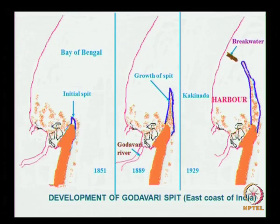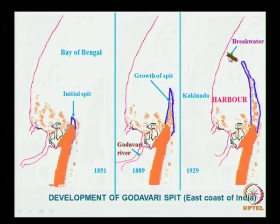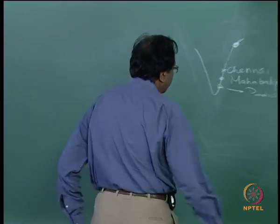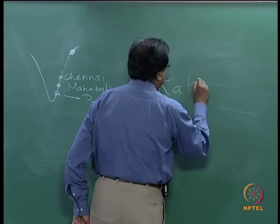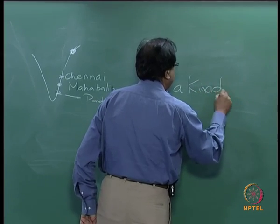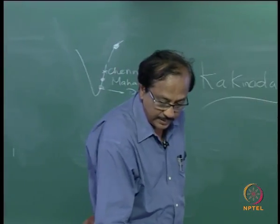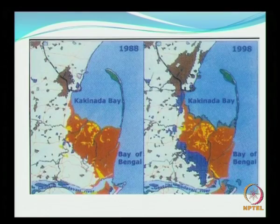You might still have some problems from waves approaching the coast in this direction if you want vessels berthed here, so you need only a small length of breakwater to take care of that. This port is called Kakinada port. This is satellite imagery from 1988 and 1989 — this is Kakinada Bay and now it is a port. This is a typical formation of spits.